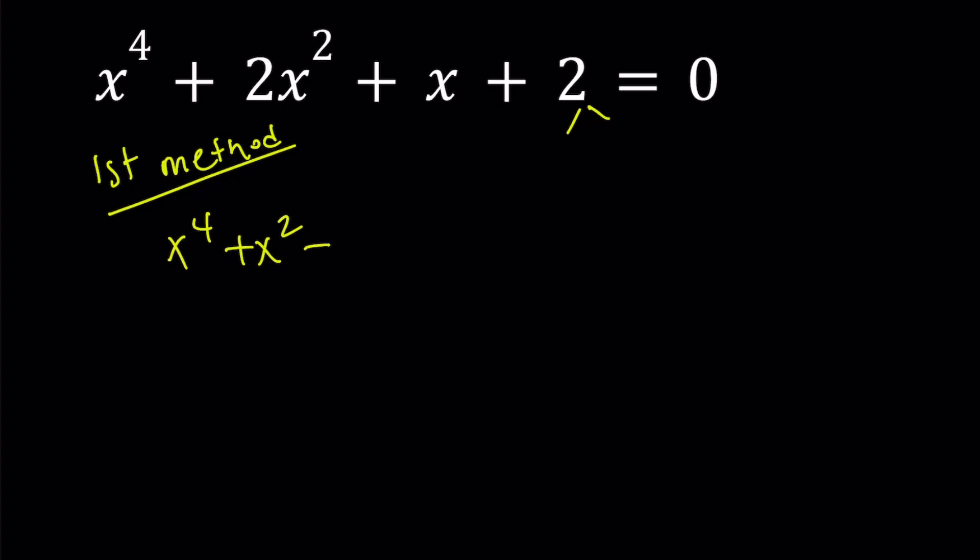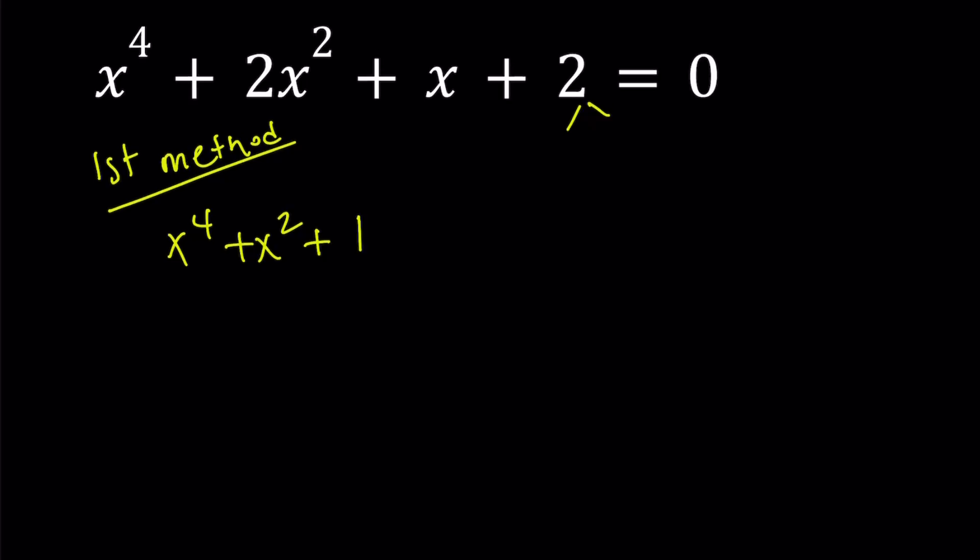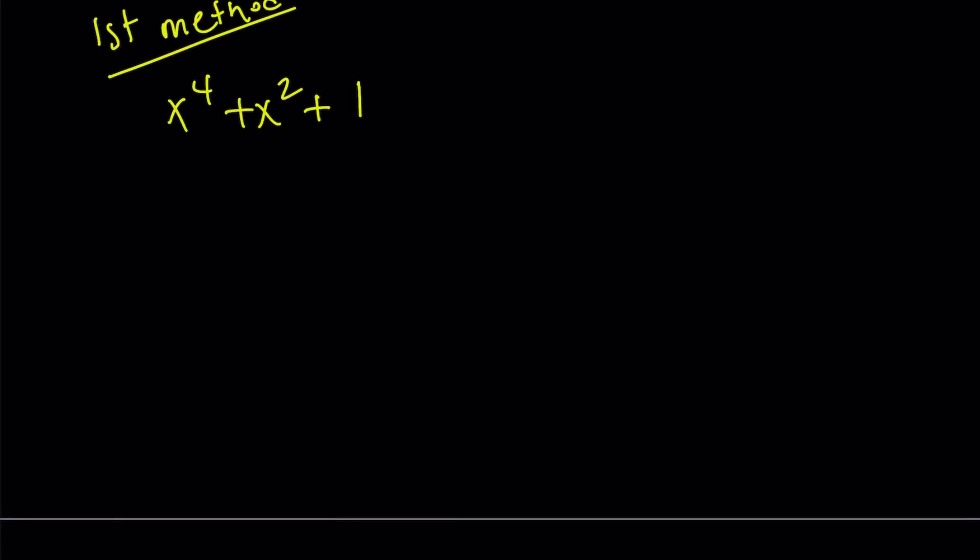And I think we've done this before in another video. So we're going to factor this expression first, x to the 4th plus x squared plus 1. Obviously, this equation can be factored by using difference of two squares, add x squared and subtract it. And then here, you get x to the 4th plus 2x squared plus 1, which is a perfect square. And x squared is, of course, a perfect square.